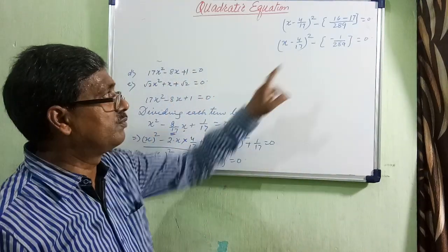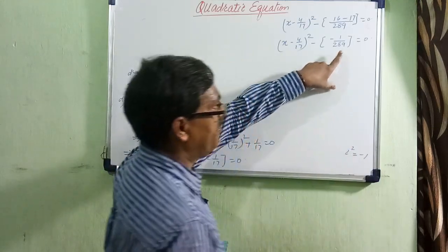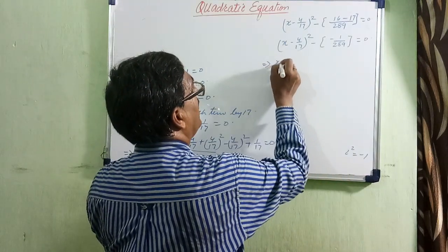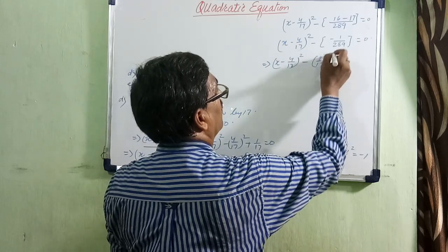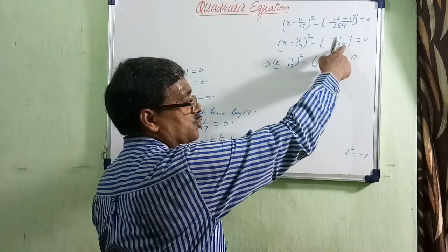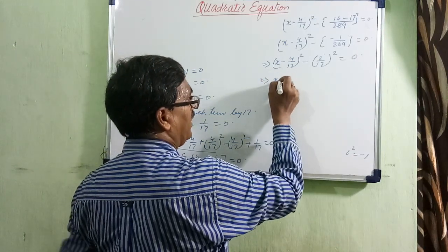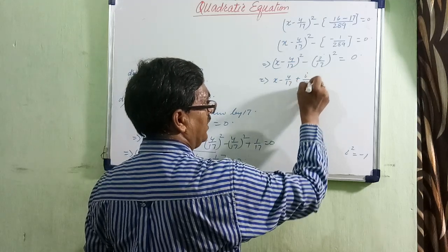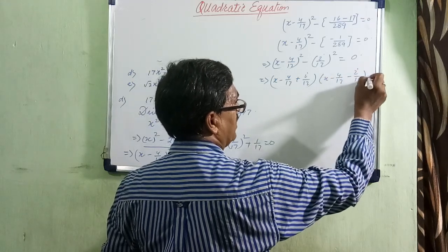The square of which number gives minus 1 by 289? Since i squared equals minus 1, we can write minus 1 by 289 as i by 17 whole squared, because 17 squared is 289. So the expression becomes x minus 4 by 17 whole squared minus i by 17 whole squared equals 0. This is now in the form a squared minus b squared, giving x minus 4 by 17 plus i by 17 into x minus 4 by 17 minus i by 17 equals 0.